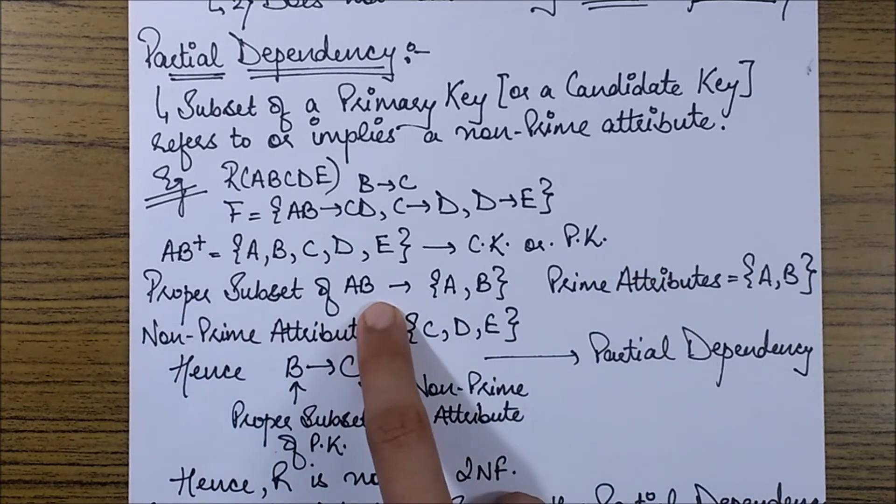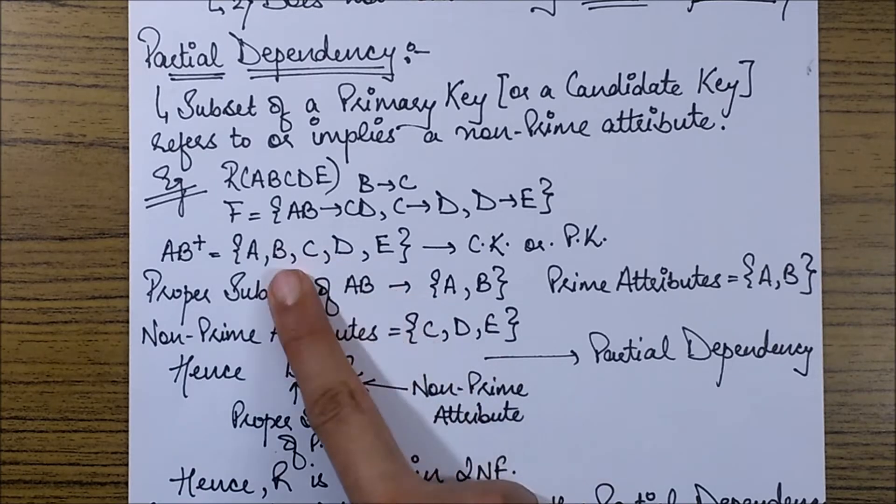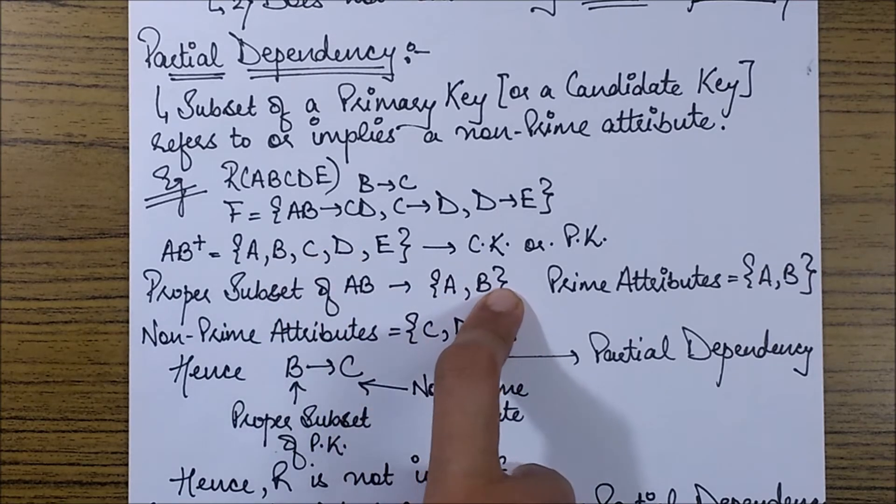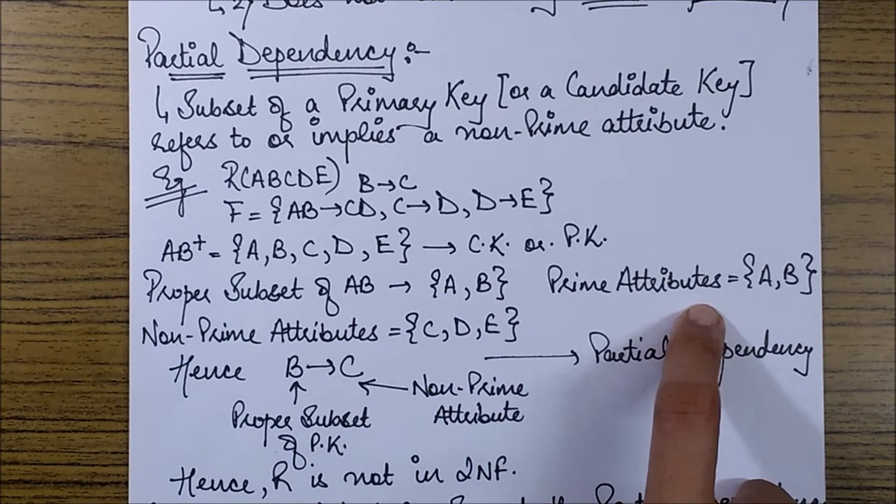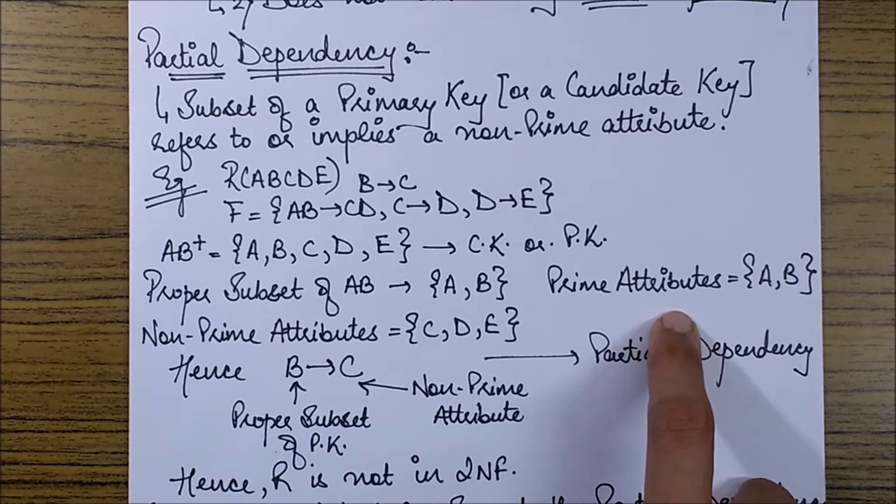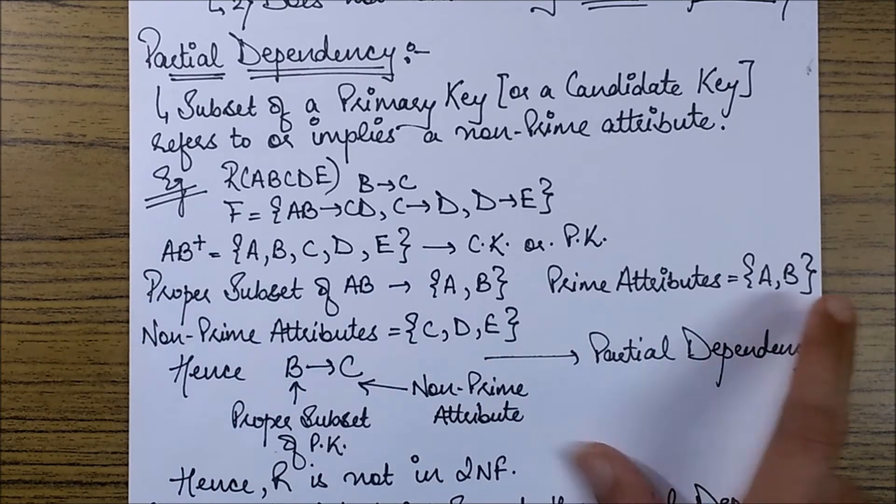Hence this is the only candidate key or the primary key for our table. So now what are the proper subsets of A, B? The proper subsets are A and B. And the prime attributes are the attributes being covered in the primary keys or the candidate keys. Since there is only a single primary key over here the attributes would be A, B.